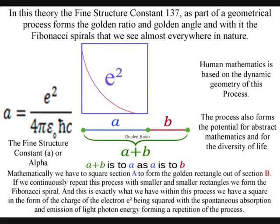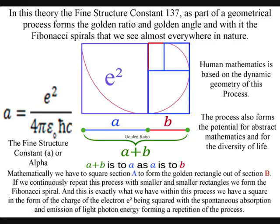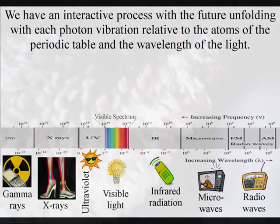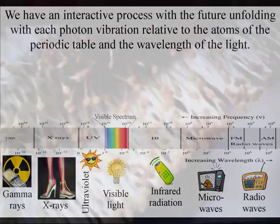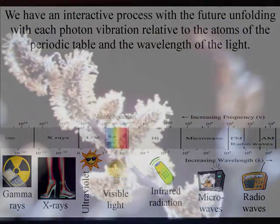Mathematically we have to square section a to form the golden rectangle out of section b. If we continuously repeat this process with smaller and smaller rectangles we form the Fibonacci spiral. And this is exactly what we have within this process. We have a square in the form of the charge of the electron being squared with the spontaneous absorption and emission of light photon energy forming a repetition of the process.